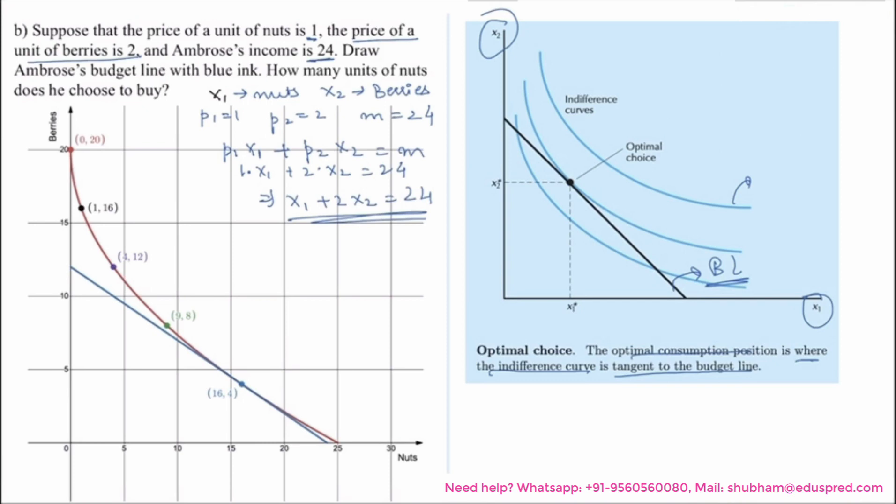If the indifference curve weren't tangent, it would cross the budget line. And if it crossed the budget line, there would be some nearby point on the budget line that lies above the indifference curve, which means we wouldn't have started at the optimal bundle.